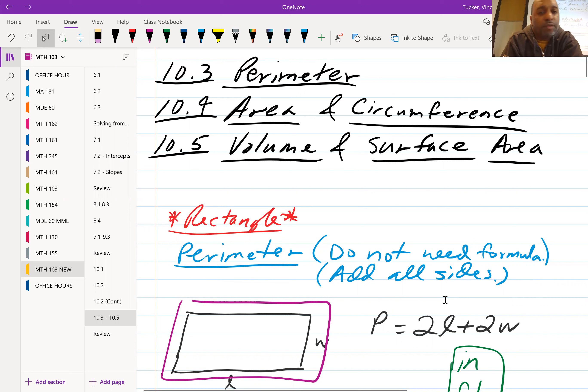So today we're going to get into 10-3, 10-4, and 10-5 perimeter area and volume, and it's easy to talk about these three together, comparing the three versus talking about them separately, so we'll talk about them all today.